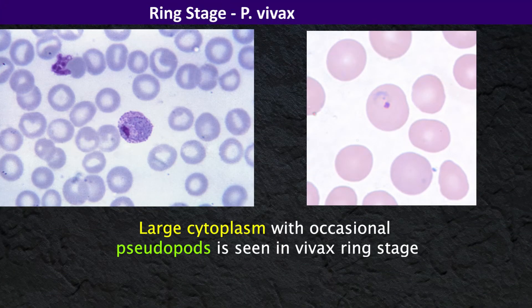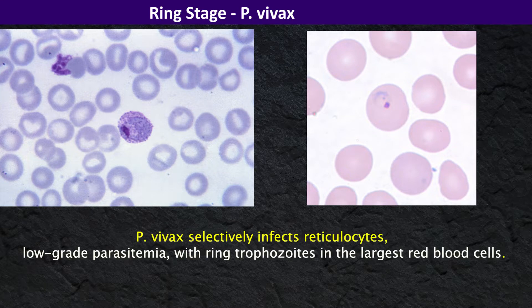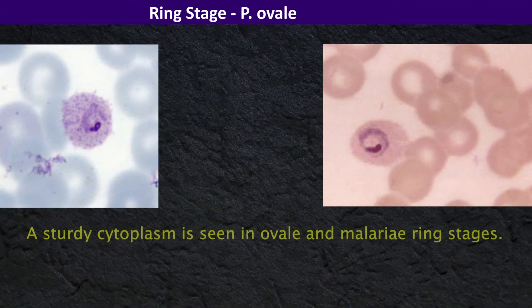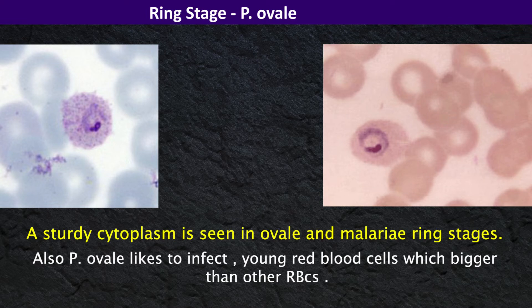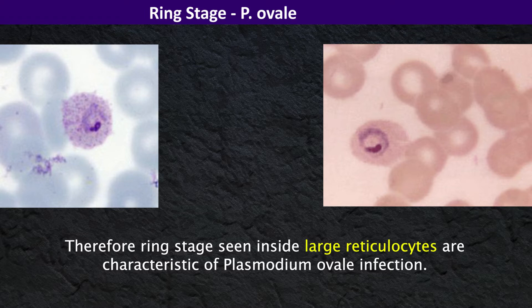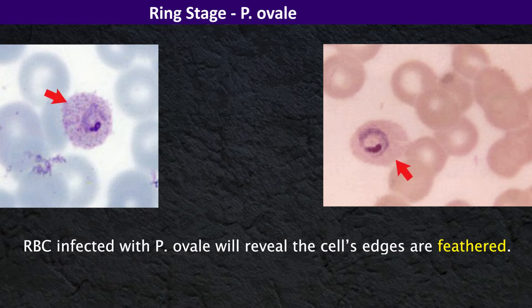Large cytoplasm with occasional pseudopods is seen in the vivax ring stage. Remember, Plasmodium vivax selectively infects reticulocytes; therefore, we would expect to see a low-grade parasitemia with ring trophozoites in the largest red blood cells. A compact cytoplasm is seen in ovale and malariae ring stages. Plasmodium ovale likes to infect young red blood cells which are bigger than other red blood cells; therefore, ring stages seen inside large reticulocytes are characteristic of Plasmodium ovale infection. Red blood cells infected with Plasmodium ovale will reveal that the cell edges are feathered.